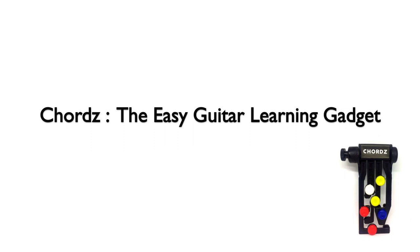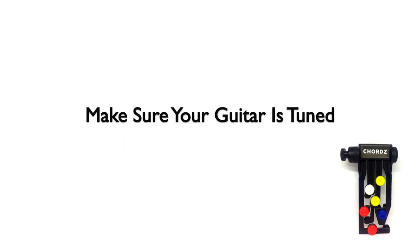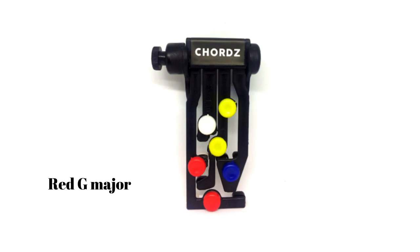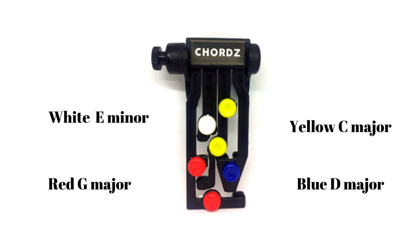Before we proceed with the session we need to understand what this product is. The chords will help you to play the basic chords of G scale on your guitar, which are the G major, E minor, C major and D major. You can identify these with the color of the buttons on this device — the red ones are for G, the yellow ones for C, the white for E minor and the blue for D major.